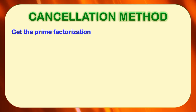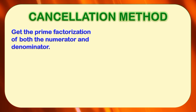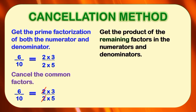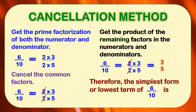The first step is to get the prime factorization of both the numerator and denominator. We will use the fraction from our story problem, which is six-tenths. The prime factorization of six is two times three, while for ten, that is two times five. The second step is to cancel the common factors — in this case, we cancel two and two. The third step is to get the product of the remaining factors: three in the numerator and five in the denominator. So the fraction is three-fifths. Therefore, the simplest form or lowest term of six-tenths is three-fifths.